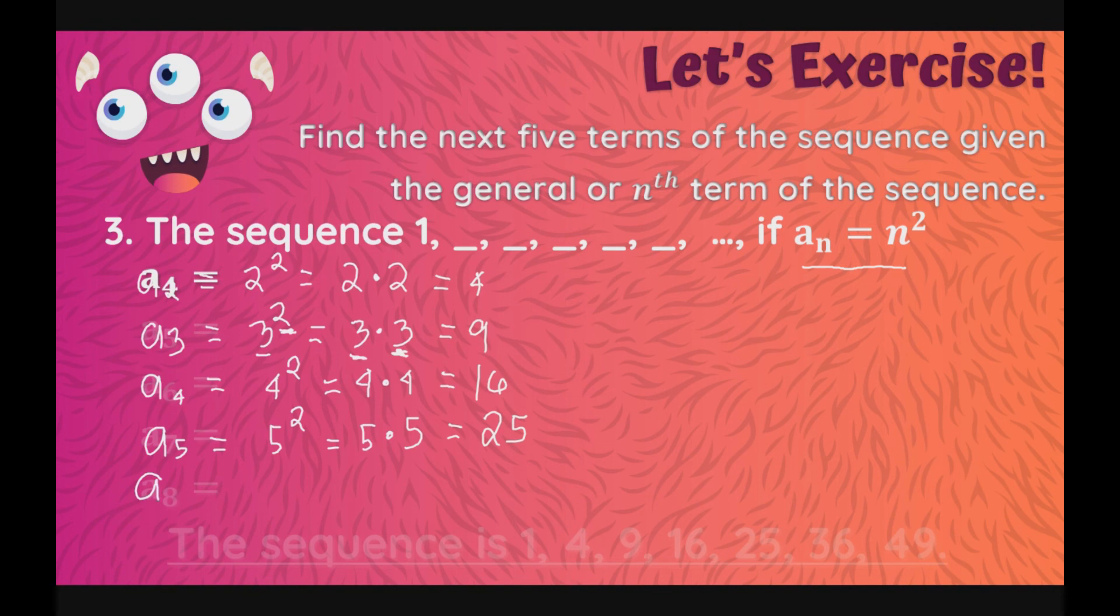Now, a sub 6 for the last one, magiging 6 raised to 2, which is equal to 6 times 6. And, 6 times 6 is 36. So, the sequence is 1, 4, 9, 16, 25, 36.